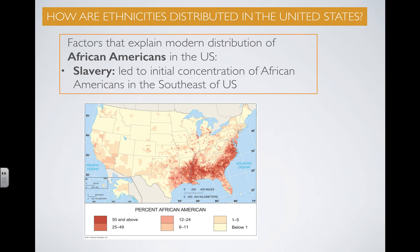Now we'll look at the modern distribution of African Americans in the United States. Slavery helps us understand the initial concentration of African Americans in the southeastern part of the United States, as that's where slavery was predominant and where slaves were brought. Please don't forget that only 10% of enslaved Africans were taken to the United States — 90% went to Central and South America, which helps explain the ethnic distribution of blacks in modern-day Central and South America. Ethnicity and slavery are global concepts, not simply a U.S. issue.